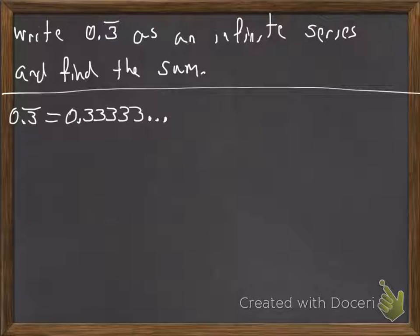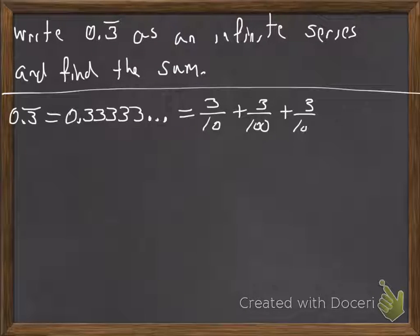And what we're going to do is we're going to write this as a fraction. So the 3 in the tenths position will be 3 over 10. Then the next 3 will be 3 over 100. And then the next 3 will be 3 over 1,000 for the thousandth position.